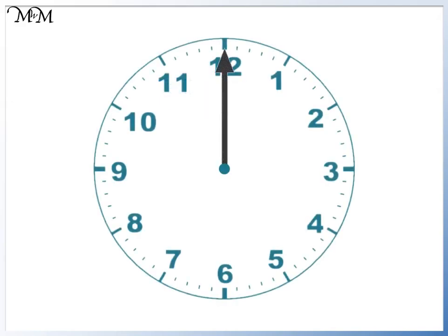This is the minute hand. It tells us how many minutes have passed. Starting at 12, zero minutes have passed. Each small increment is one minute, so at this point one minute has passed.